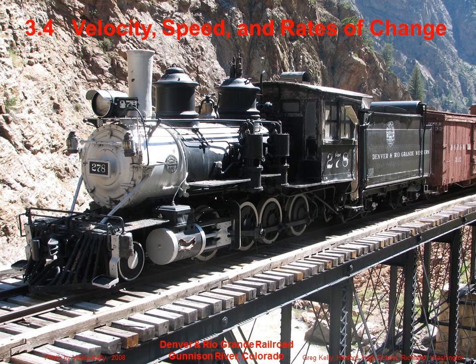This is locomotive 278 on permanent display on an old bridge over the Gunnison River in Colorado. The locomotive used to run on the Denver and Rio Grande Western Railroad. If you look closely, you can tell that it's no longer operating because there's a big hole in the cylinder.